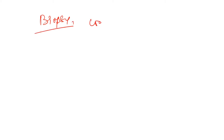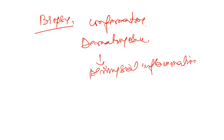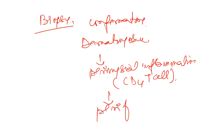The confirmatory diagnosis of dermatomyositis is done through biopsy. On biopsy, we see perimysial inflammation — inflammation in and around the muscle — with CD4 T cells maximally found. We also see perifascicular atrophy.